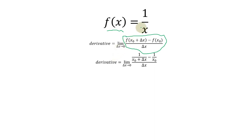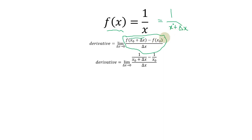Let's simply put the values into this function. f(x naught + delta x) will be 1 over x, and in place of x we put x naught plus delta x, so it becomes 1 over (x naught + delta x). So 1 over (x naught + delta x) is any point in the function, minus f(x naught), and f(x naught) simply becomes 1 over x naught. So the expression becomes: 1 over (x naught + delta x) minus 1 over x naught, all divided by delta x.